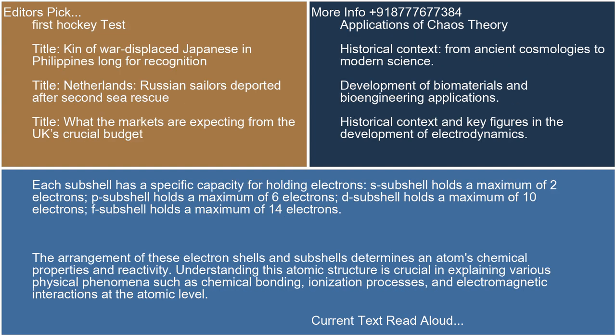Each subshell has a specific capacity for holding electrons. The S subshell holds a maximum of 2 electrons, the P subshell holds a maximum of 6 electrons, the D subshell holds a maximum of 10 electrons, and the F subshell holds a maximum of 14 electrons.